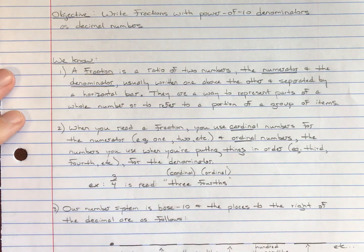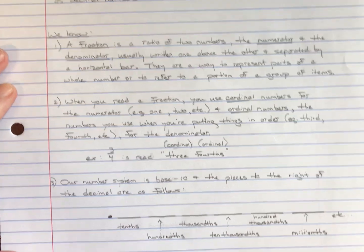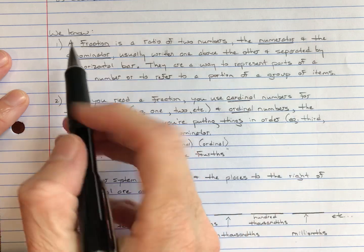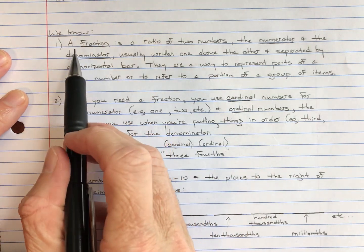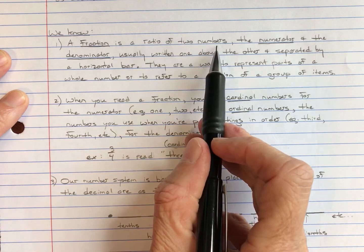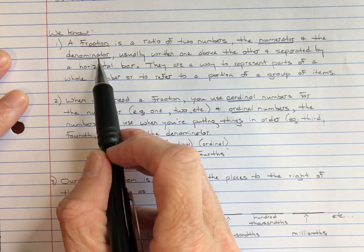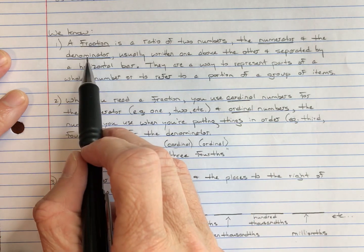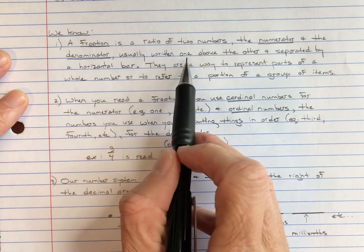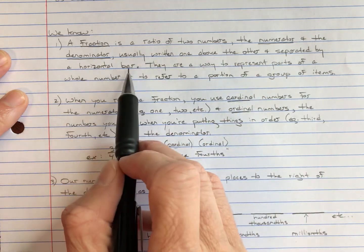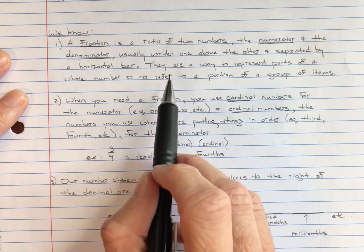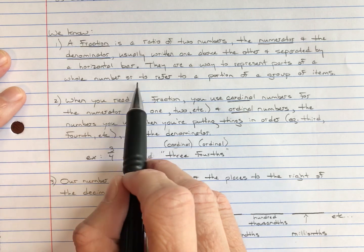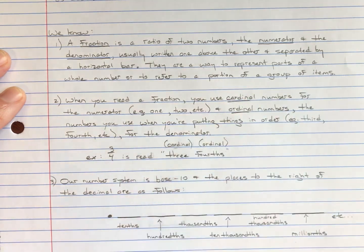Before we start, let's remind ourselves that we already know quite a few things. Number one, we know that a fraction is a ratio of two numbers — the numerator and the denominator. The numerator is the number on top, the denominator is the number on the bottom, usually written one above the other and separated by a horizontal bar. Fractions are a way to represent parts of a whole number, or to refer to a portion of a group of items.